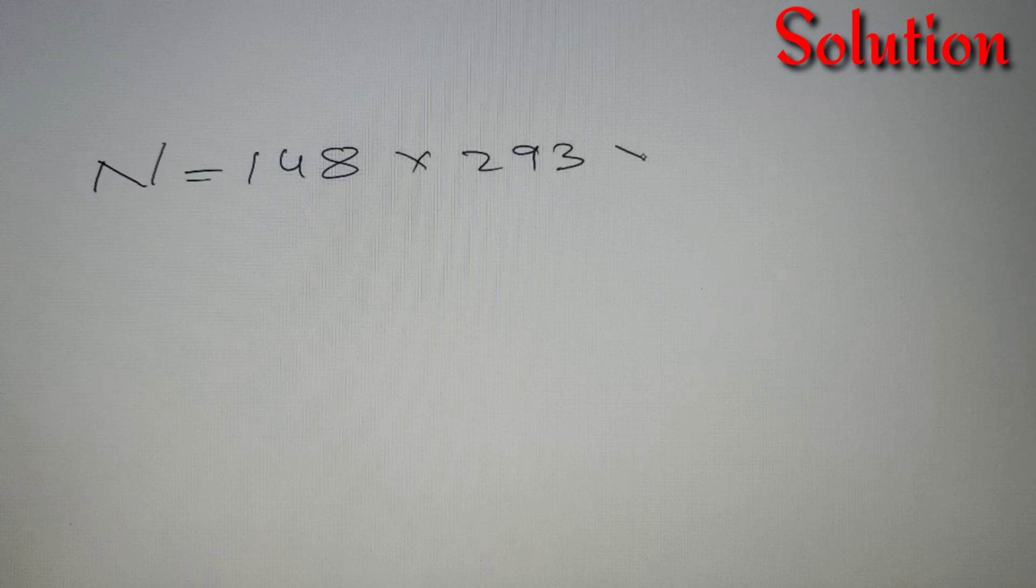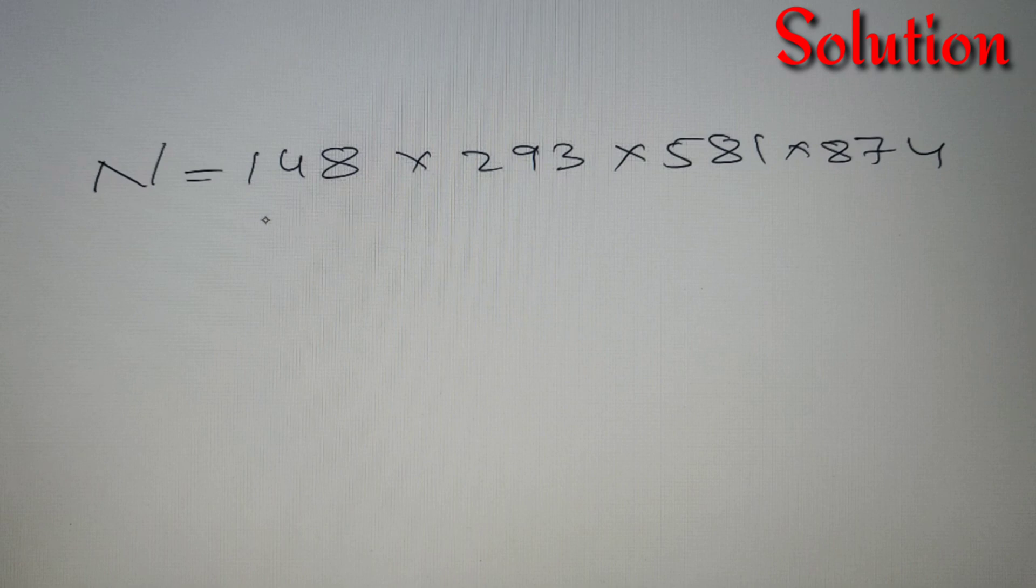We are given that n is a number and it is 148 into 293 into 581 and lastly into 874. We are given the product of these four numbers and we have to find the remainder when the product is divided by 29.